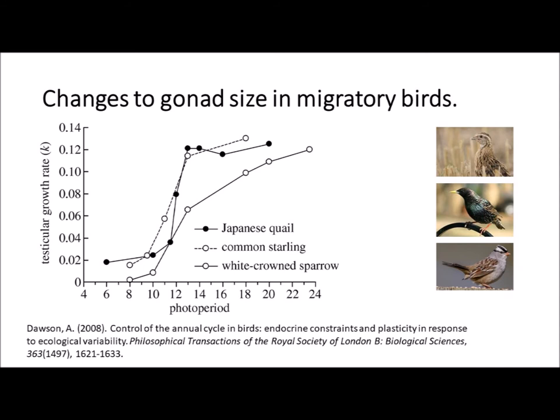Of course, it's not just stags that have a refined control of behaviour due to environmental and hormonal conditions. A whole range of animal species control their behaviour patterns based on changes to physiology conducted according to information taken from the external environment. Some of the best studied examples of this, outside of mammals, occur in migratory birds. What you can see in this figure is testicular growth rate of three species of migratory birds: the Japanese quail, the European starling, and the white-crowned sparrow. This graph shows that increasing testicular growth rate correlates beautifully with increasing photoperiod. Birds that migrate direct that behaviour based on environmental cues that tell them when resources are going to be more accessible.